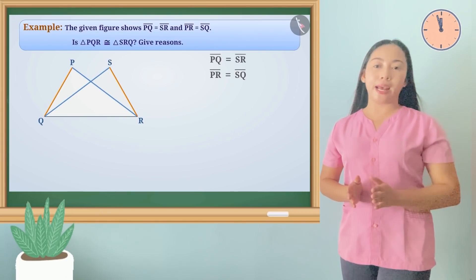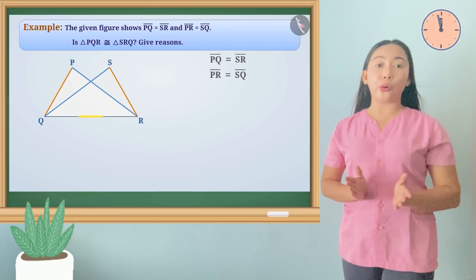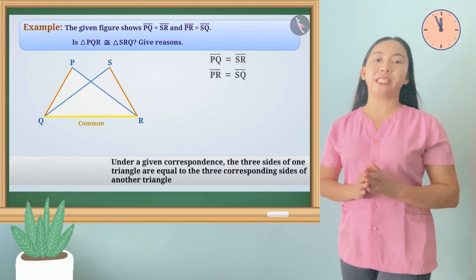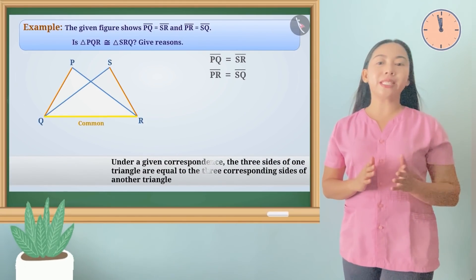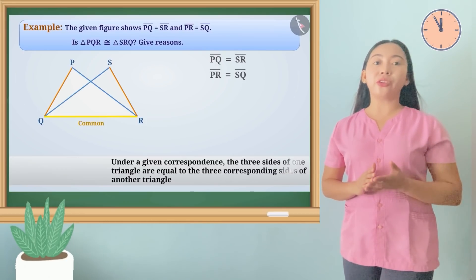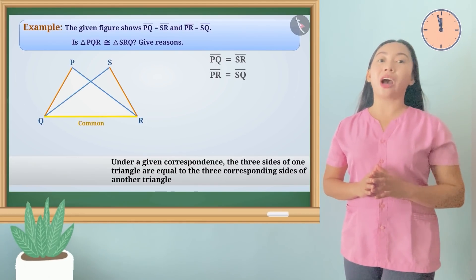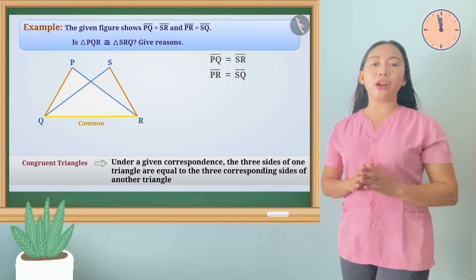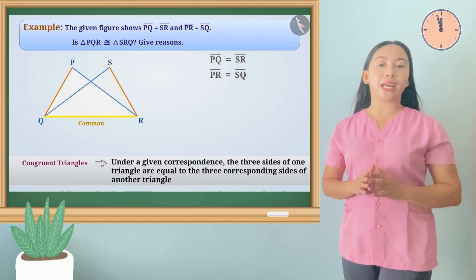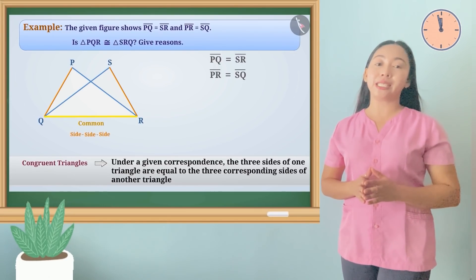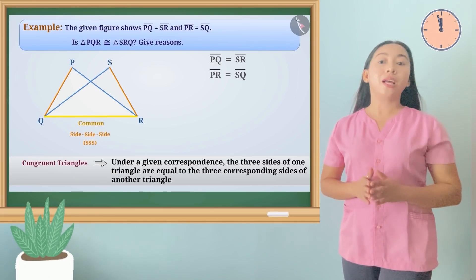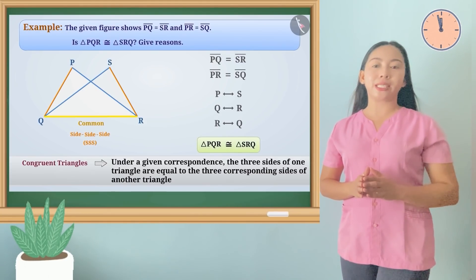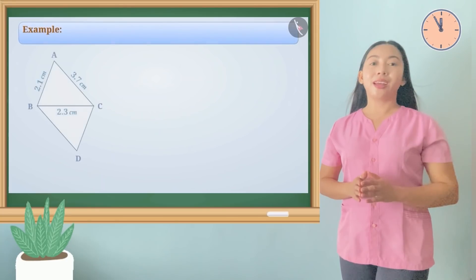We can also see that side QR is common to both triangles. We should remember that if the three sides of a triangle are equal to the three sides of another triangle, then the triangles are congruent. Triangles are congruent based on the SSS or side-side-side congruence postulate. Therefore, triangle PQR is congruent to triangle SRQ.